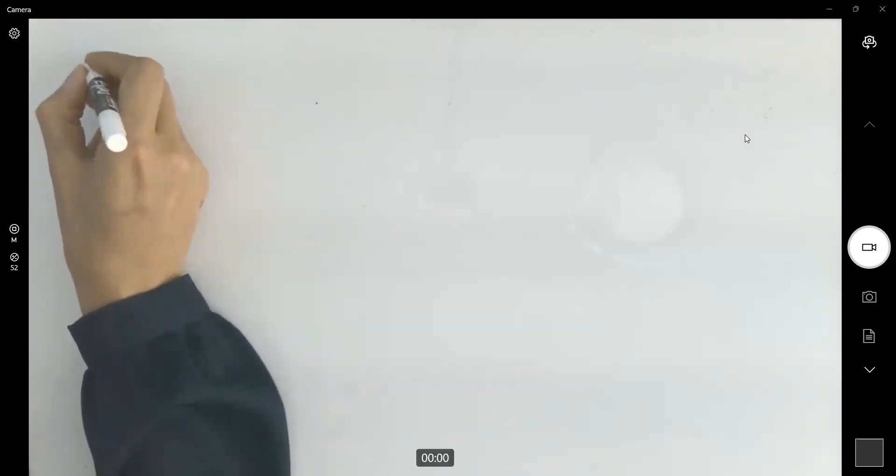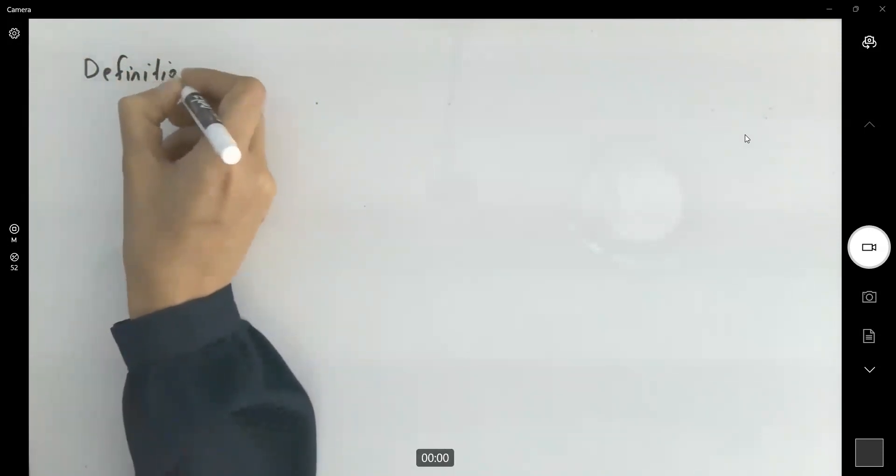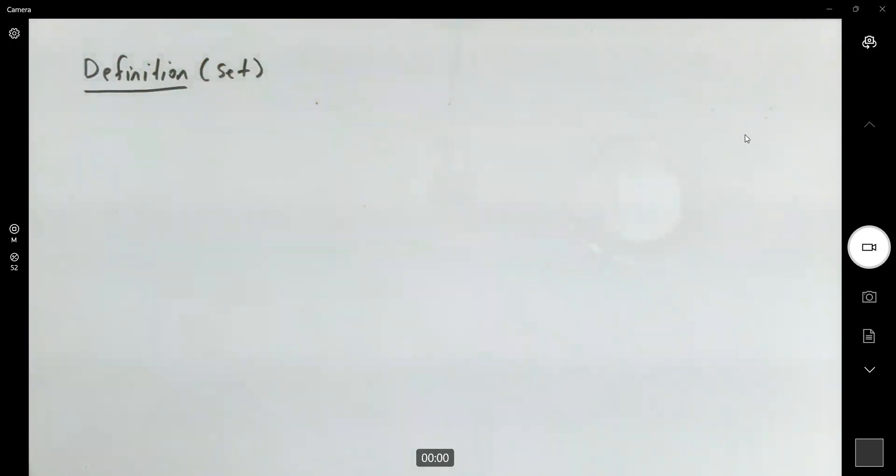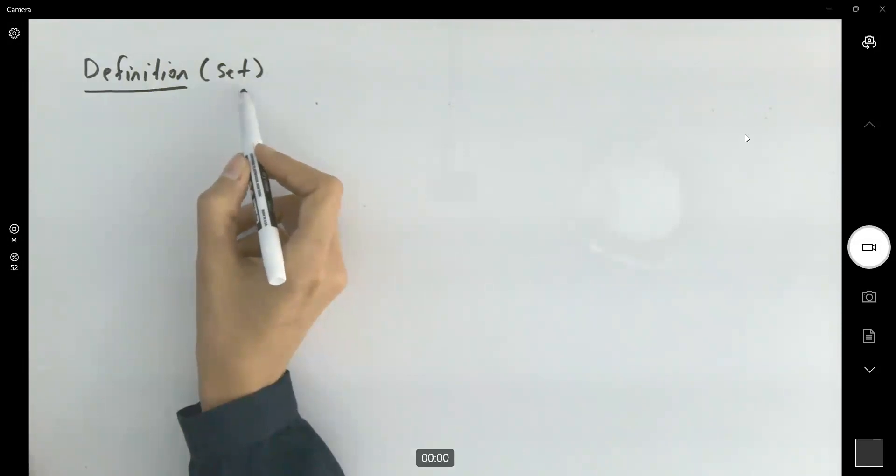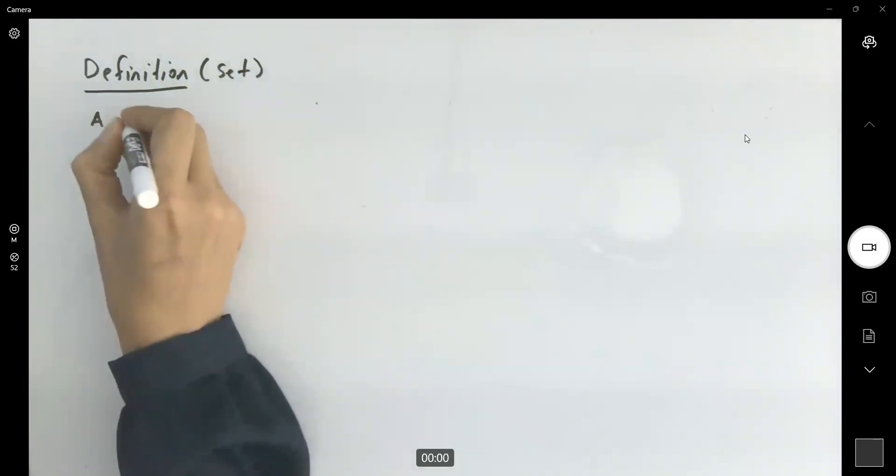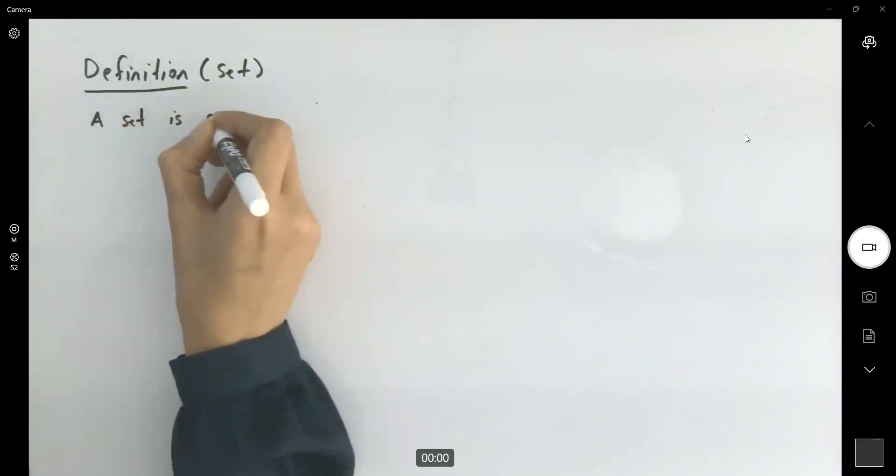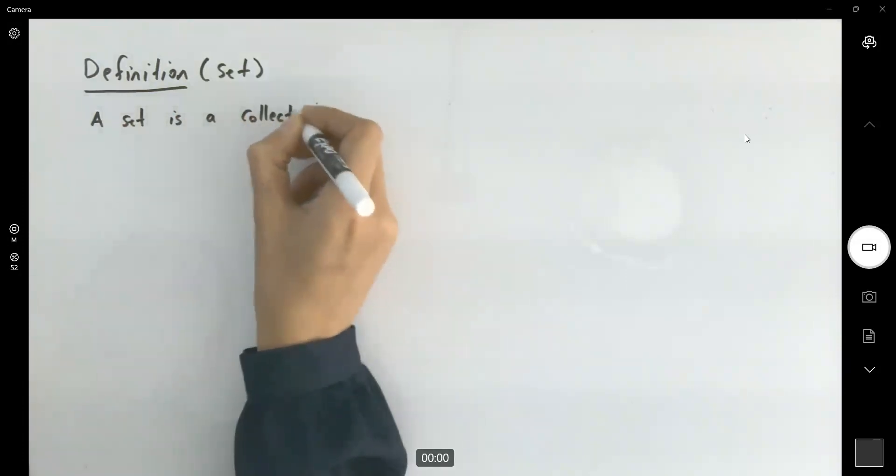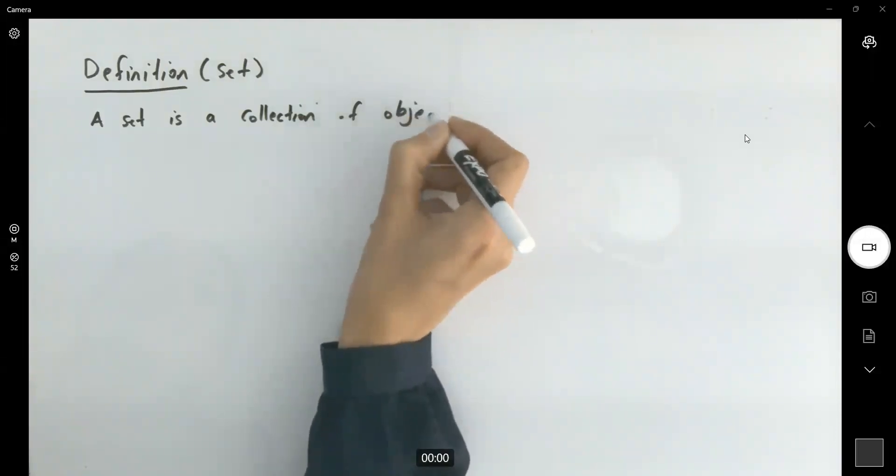Let's talk about sets, definition of a set. How do you define a set? When you're talking about a set, we're talking about a collection of objects. A set is a collection of objects.